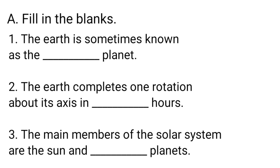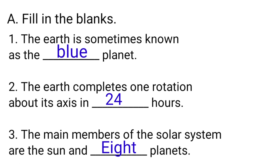Fill in the blanks: 1. The Earth is sometimes known as the blue planet. 2. The Earth completes one rotation about its axis in 24 hours. 3. The main members of the Solar System are the Sun and 8 planets.